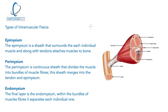The epimysium is a sheath that surrounds each individual muscle along with tendons, attaching muscle to bone. The thickness of the epimysium varies — it's thicker around shorter muscles and thinner around longer muscles. It's the only tissue that links all the fascicles together, which allows tension generated in one area of the muscle to cause tension throughout the whole epimysial network, giving mechanical strength and stability to the muscle and surrounding muscles.